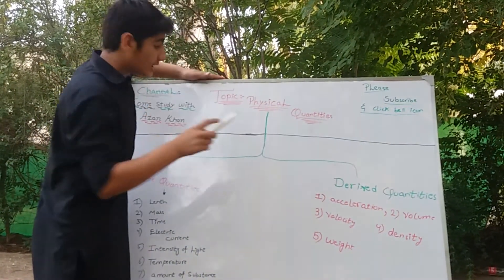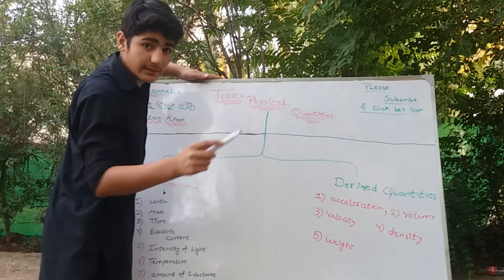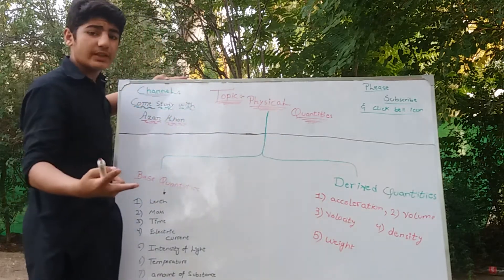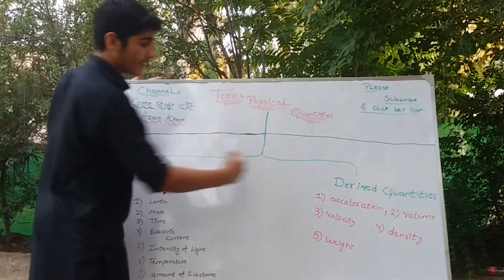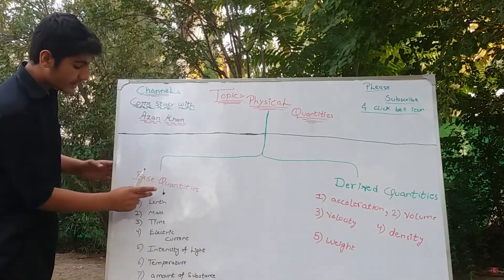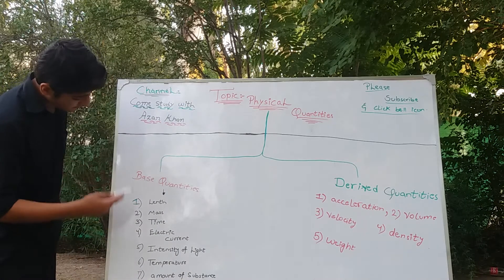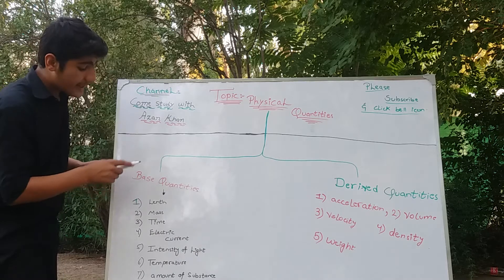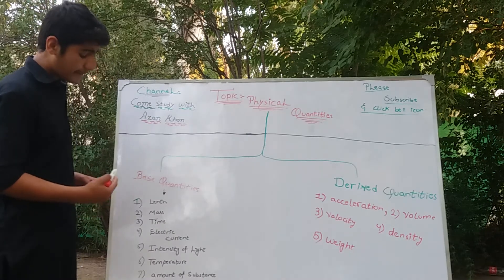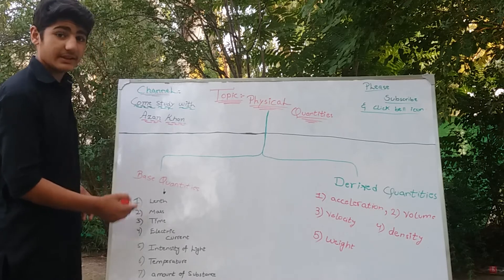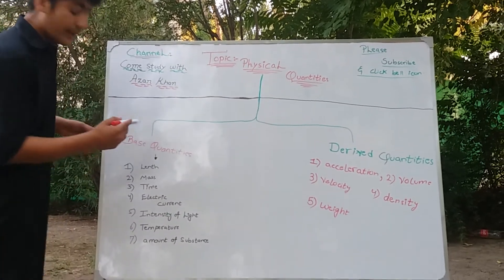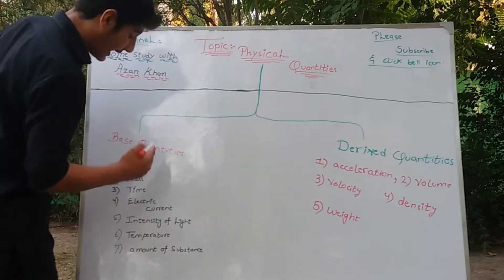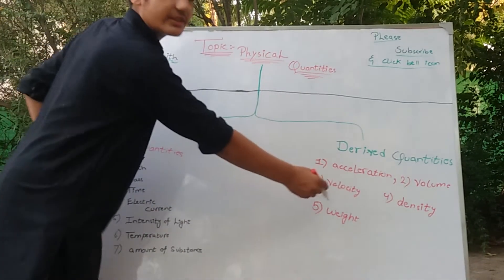So let me give you a review of this lecture. Physical quantities are the quantities which are measurable. From physical quantities, two quantities are derived: one is base quantity and the other is derived quantity. Base quantities — length, mass, time — are all measurable. And remember that with the help of base quantities, derived quantities are formed.